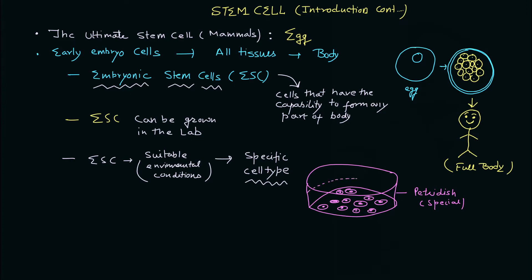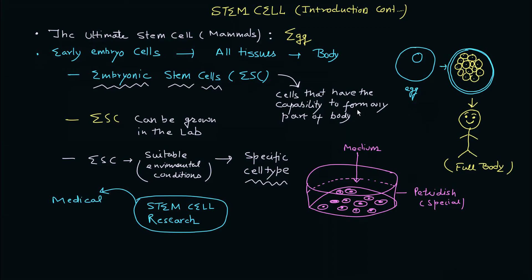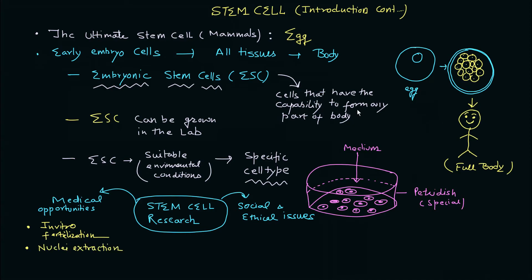You can see the round structures — these are cells that usually grow after they attach to the bottom of the petri plate. You add medium and keep changing it, because these cells grow slower than bacteria. This is part of stem cell research. In stem cell research you have medical opportunities — for example, in vitro fertilization, where you fertilize eggs and sperm in the lab to form an embryo. You can also do nuclei extraction, where you have a defective sperm, extract the nucleus, and use that to fertilize the egg.